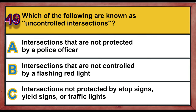Question 49. Which of the following are known as uncontrolled intersections? A. Intersections that are not protected by a police officer. B. Intersections that are not controlled by a flashing red light. C. Intersections not protected by stop signs, yield signs, or traffic lights. Correct answer is C: Intersections not protected by stop signs, yield signs, or traffic lights.